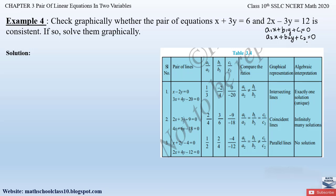If they have one solution then it is called a unique solution; in that case the lines will be intersecting at one point. If the lines obtained by these two equations are coincident or overlapping, then we obtain an infinite number of solutions.